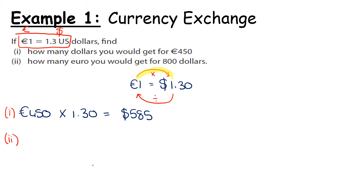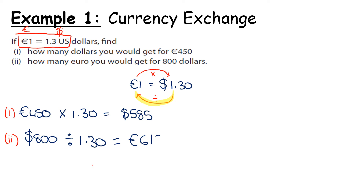For part two, it asks how many euros we'll get for 800 dollars. We start with dollars and go back to euro on our little exchanger, so we're going to divide. What do we divide by? If we divide by one, nothing changes — we always want it to change, it is an exchange rate. So dividing 800 by 130 gives us 6.15 euro. Remember, we're in money so two decimal places — 6.15. Double check: dollars are bigger than euro, which is correct.